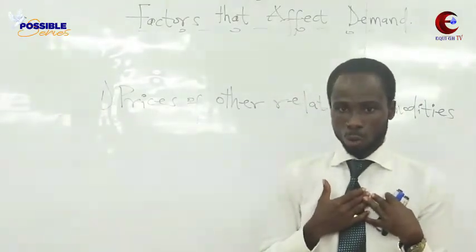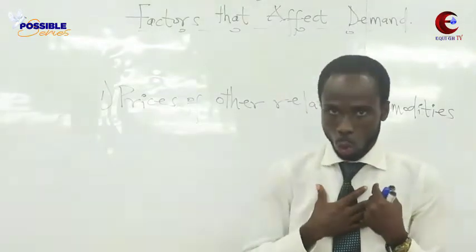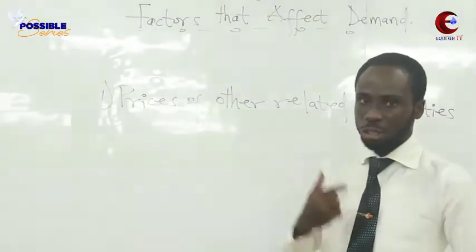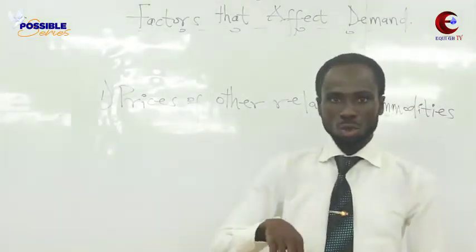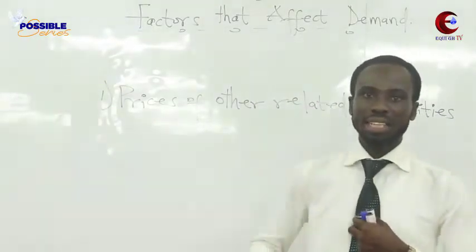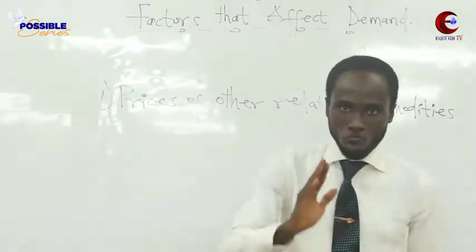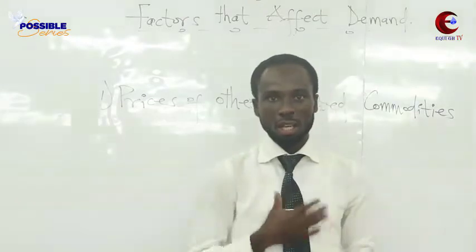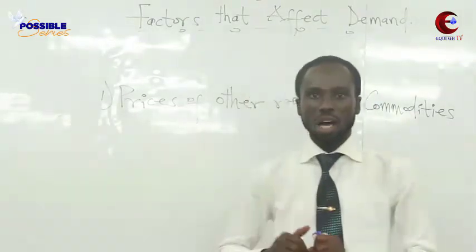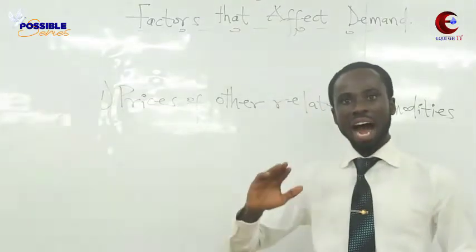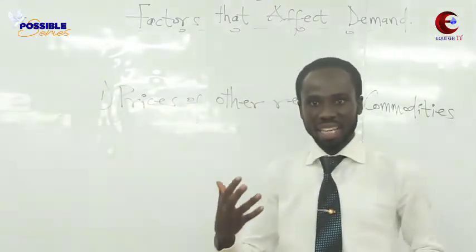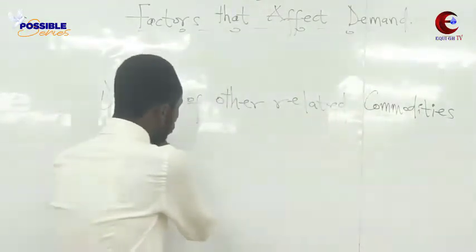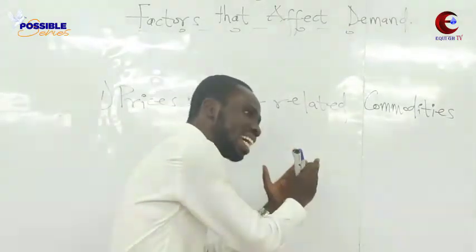Assuming that our commodity is Richoku. This time we are not going to look at the price of Richoku, but we are going to look at the impact or influence of the price of another commodity, like Milo, on our commodity. That is what we call prices of other related commodities.